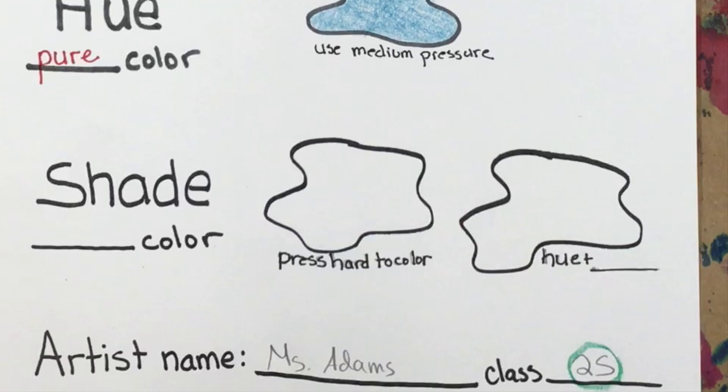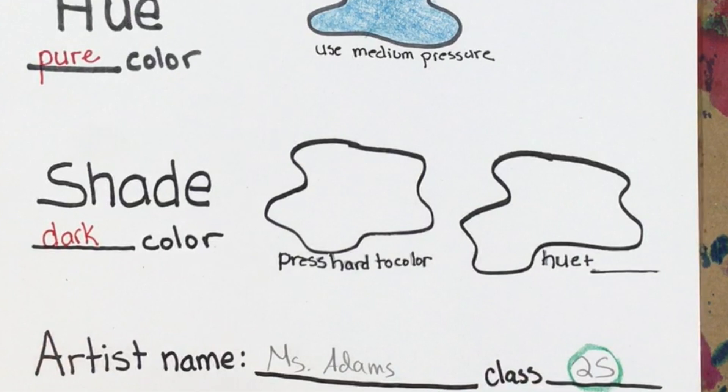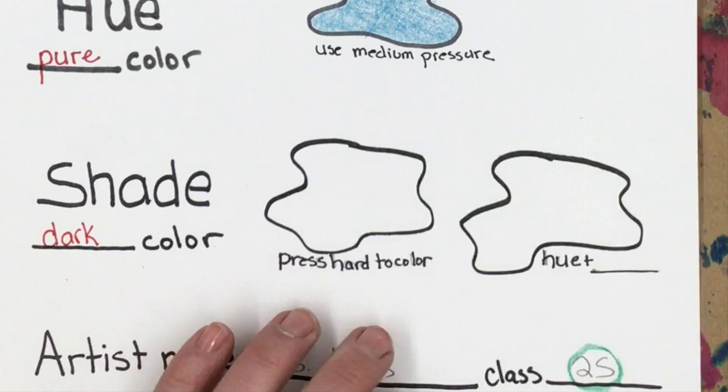A shade is a dark color. You can make it by pressing hard to color, or you can add black to the hue.